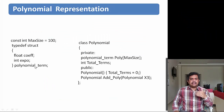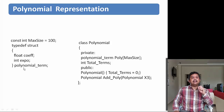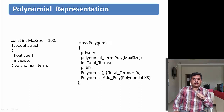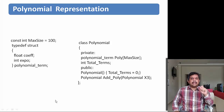We can also represent polynomials using a structure with two fields: coefficient and exponent. This structure is called 'polynomial term'. A class called 'polynomial' is defined with a private array of polynomial terms of maximum size 100, a total term count, and two operations: a constructor to create a polynomial, and a method to add two polynomials. In this video we concentrate on polynomial addition.